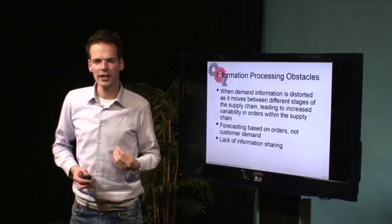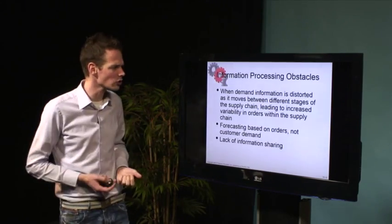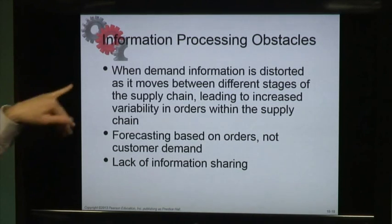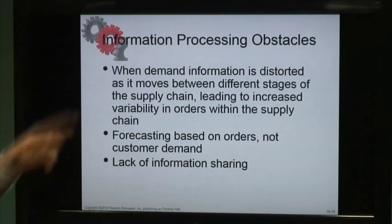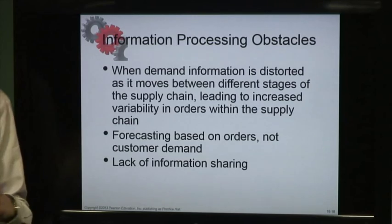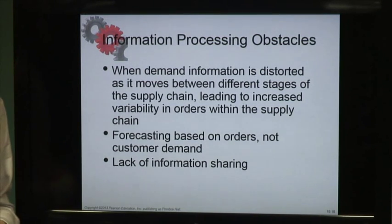The second obstacle is information processing obstacles. These occur when demand information is distorted as it moves between different stages of the supply chain, leading to increased variability in orders within the supply chain. This is in part the bullwhip effect. If you want to know more about the bullwhip effect, please recall video 1 about chapter 10: coordination in the supply chain.